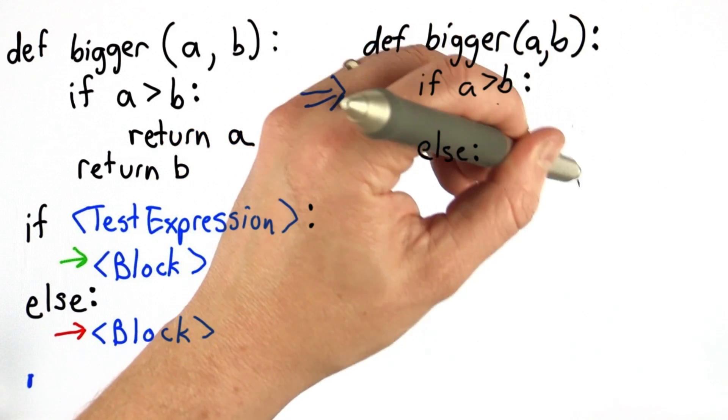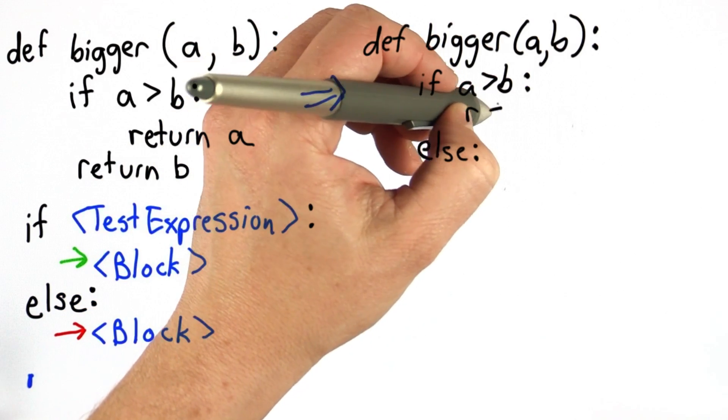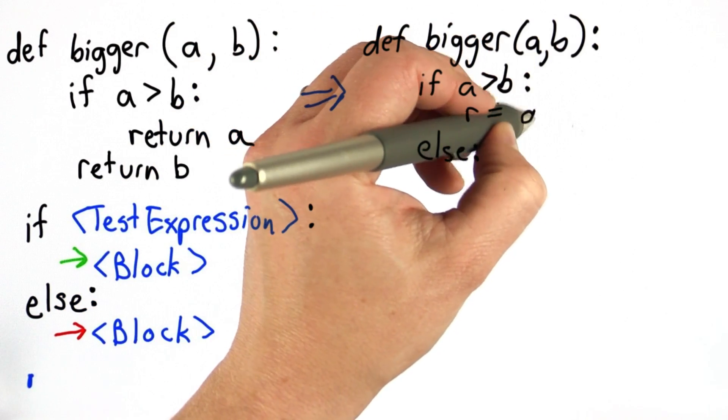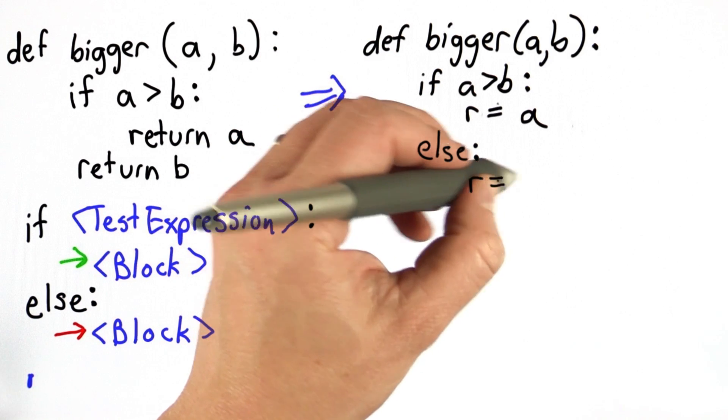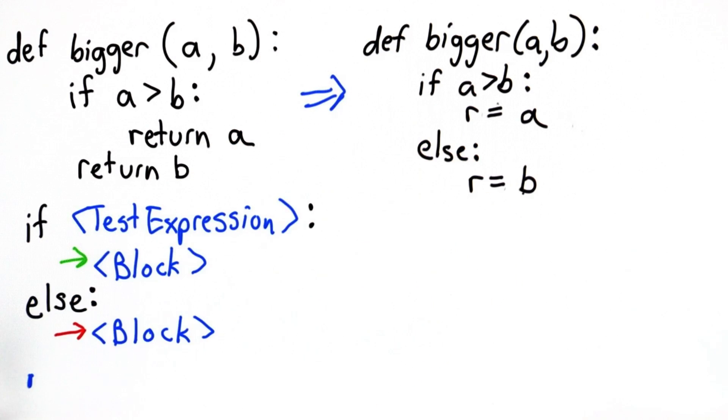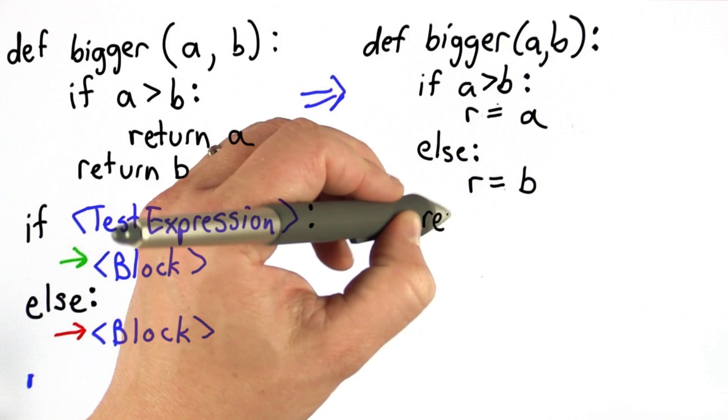So we can have inside the first if, we'll assign to the variable r the result A. That's going to be the one that's bigger. Inside the else, we'll assign to the variable r the result B. That's the one that's bigger when the if test fails. And now the next statement here could return r.